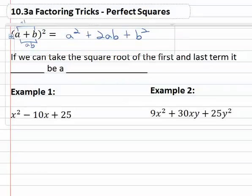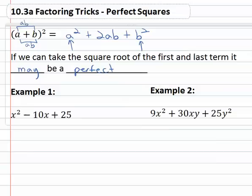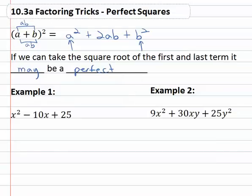What we're going to do here is that exact same process backwards, and the way we identify that is if we look at the first and last term and say, hey, I can take the square root of both of those. If we can take the square root of the first and last term, it may be a perfect square.